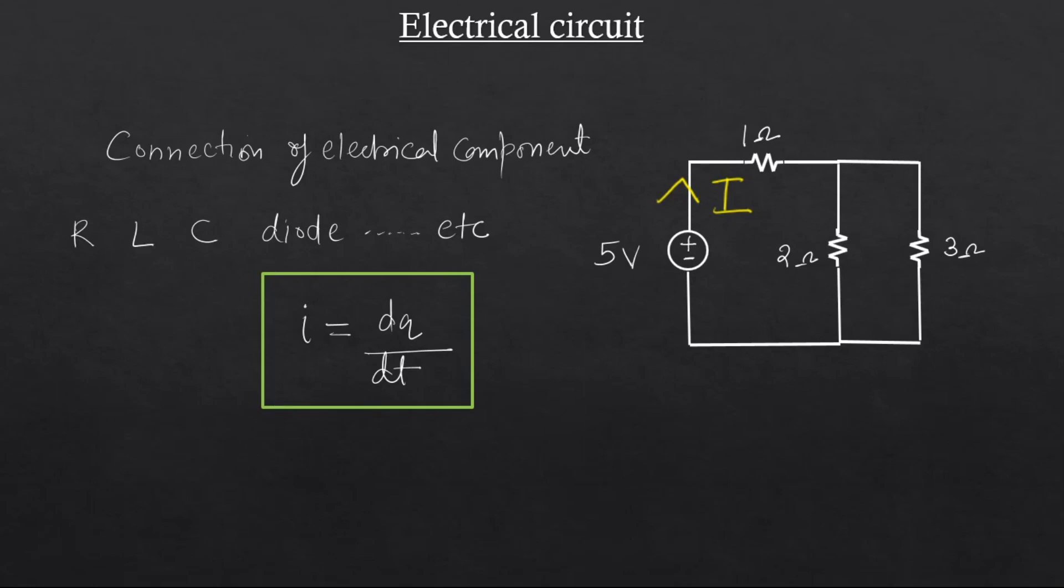Now for the current flow, what is the necessary condition? There are two necessary conditions. One is EMF source. What is EMF? EMF is the electromotive force which is responsible for energizing any sorts of electrical circuit. And next is your closed path. For current to flow, we need an EMF source and a closed path.